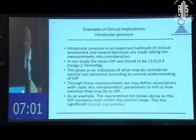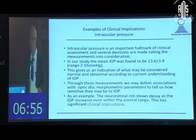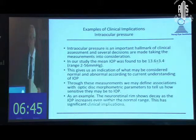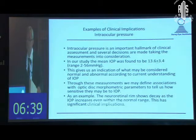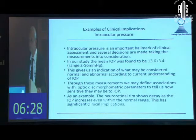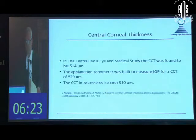The second clinical translational finding was intraocular pressure, which continues to be an important hallmark of clinical assessment, with several decisions made based on this measurement. In our study, the mean intraocular pressure for the central India population was found to be 13.6 mmHg. This gives us an indication of what may be considered normal and abnormal, and through these measurements we can define associations with optic disc morphometric parameters.